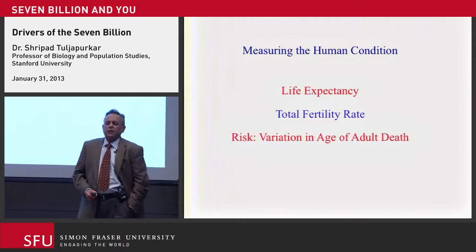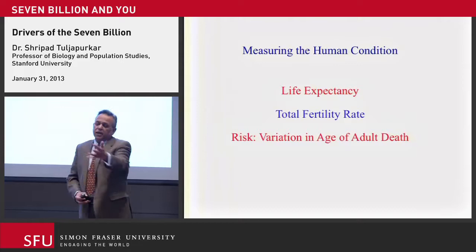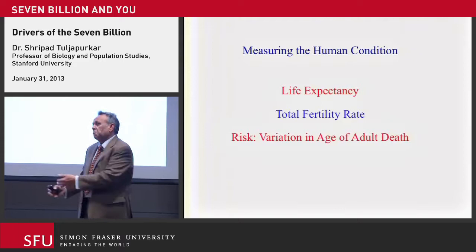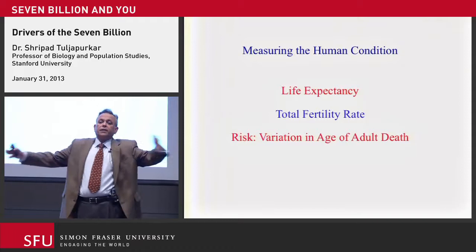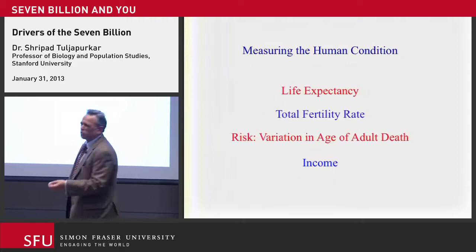So, risk. I can tell you the average age at which you're going to die, but the question is how certain are you that that number is a good one? Suppose the average age of death is going to be 75, but it turns out you could actually die as early as 45 and as late as 105. Then that's a big spread and there's a lot of uncertainty associated with that. A measure of uncertainty is the variation in the age of death. Income is clearly a measure that's also used to tell you how people are doing.